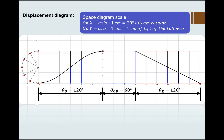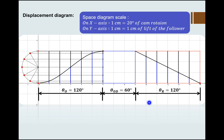We have taken the space diagram scale where on the x-axis 1cm equals 20 degrees of cam rotation. The outstroke is 120 degrees, so 120 divided by 20 is 6cm — this particular length will be 6cm, divided into 6 equal parts. The outstroke dwell is 60 degrees, so 60 divided by 20 is 3cm. Similarly, the return stroke is 120 degrees, so it is also 6cm.